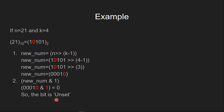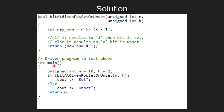Let's see the code for this. In the main function, we call our function, bit at given position set or unset. This function takes two parameters: the first parameter is the number n, and the second parameter is the position k. In the first step, we right shift n by k minus 1 positions, and store this value in the new_num variable.